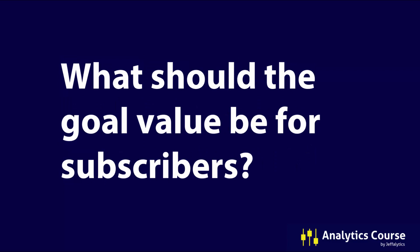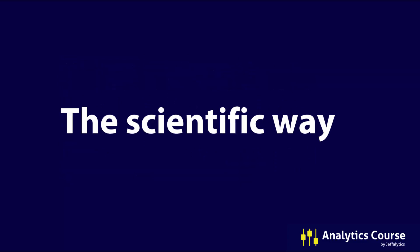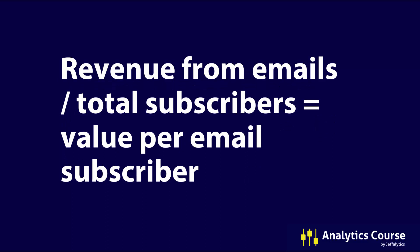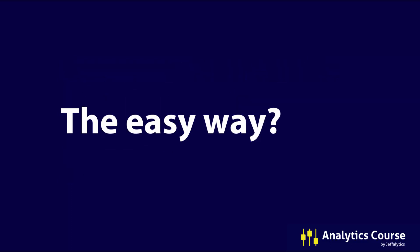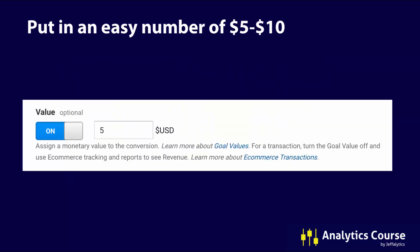What should be the goal value for email subscribers? The scientific way — very similar to what Google has — is: revenue from your emails divided by your total subscribers equals the value per email subscriber. Pretty straightforward if you have these numbers available, or if you can take a snapshot in time from the last email campaign that was meant to drive revenue. The easy way: just put in some kind of number, I'd say $5 to $10, some kind of arbitrary number that makes sense that you're comfortable with, knowing that email subscribers are not the same thing as a sale but they can lead to sales.